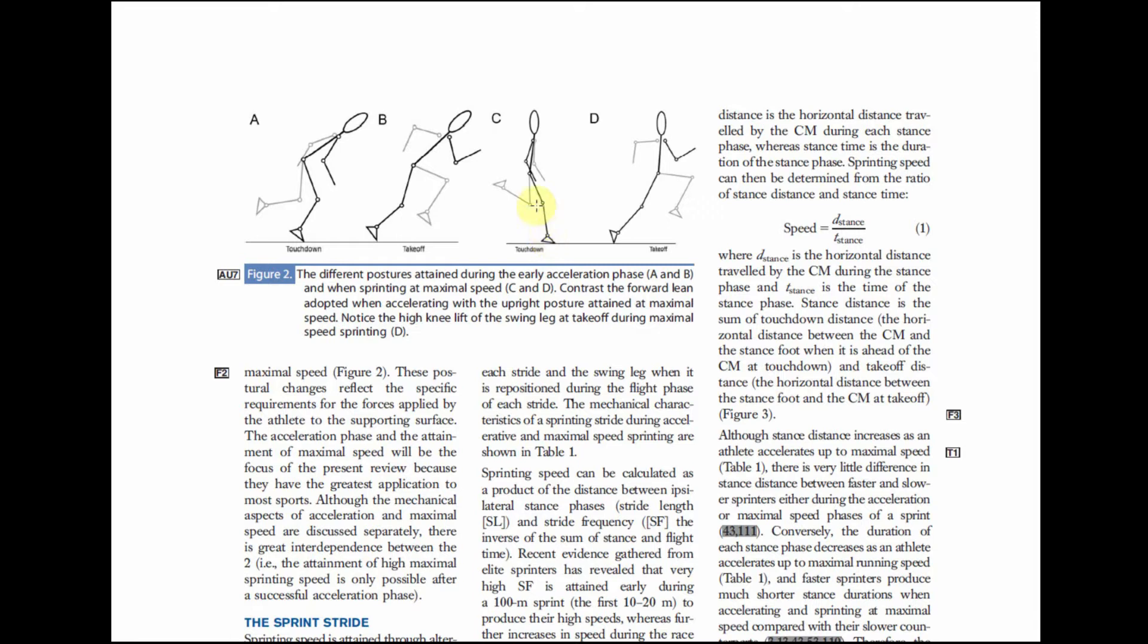This impact limb deceleration mechanism requires that the athlete produce high hip flexor power output to rotate this swing leg up and forward. They then require a large amount of strength in the hamstrings group in order to initiate this active leg motion where the leg is going to be pulled down into the ground, back and down into the ground.